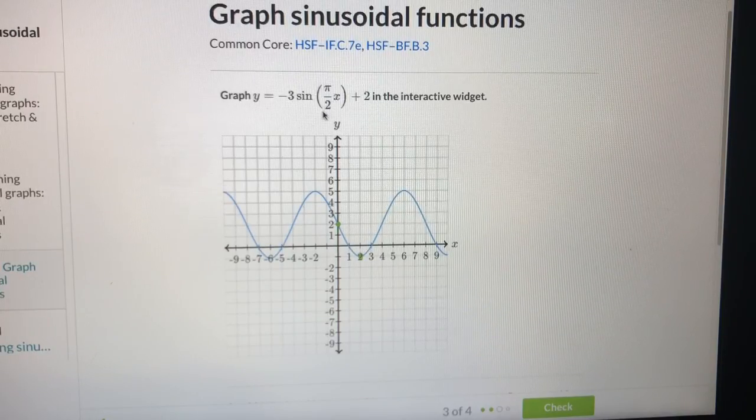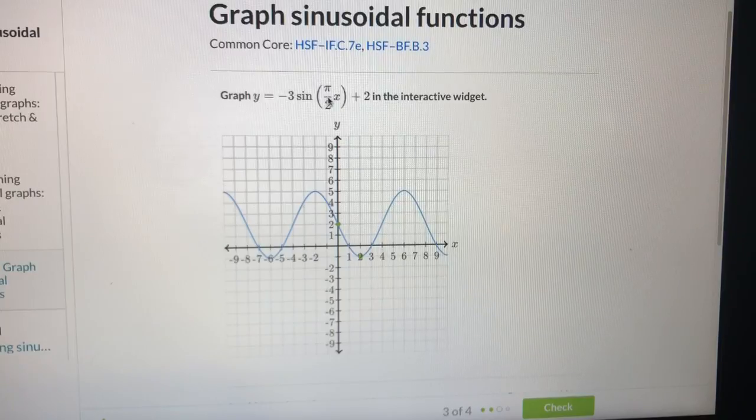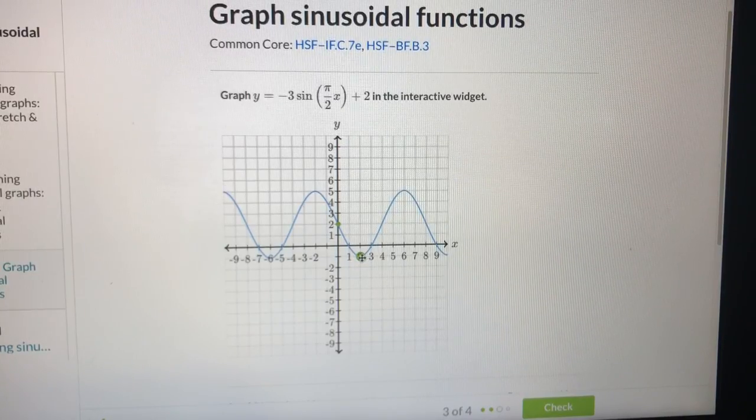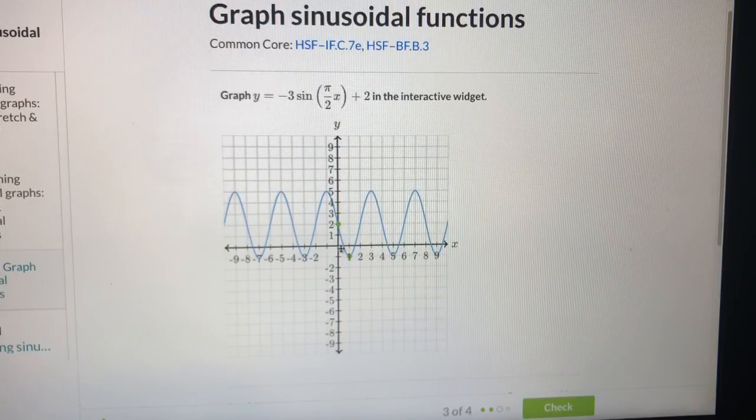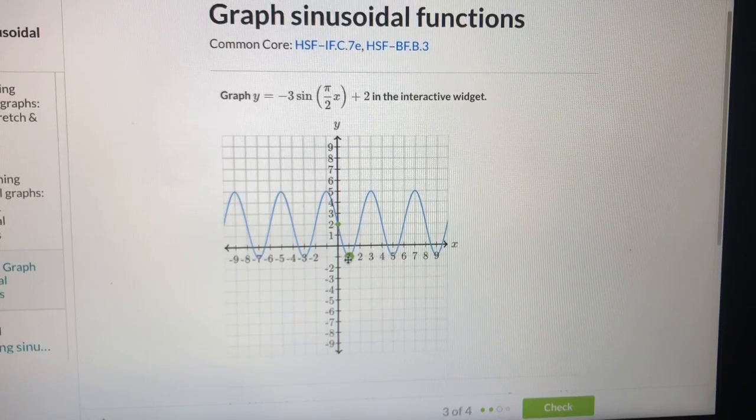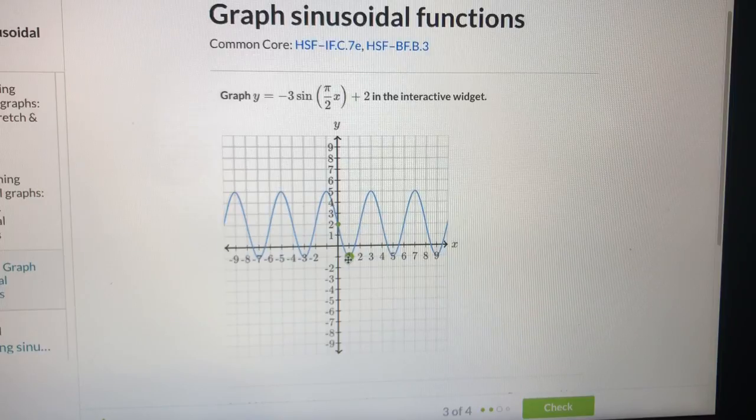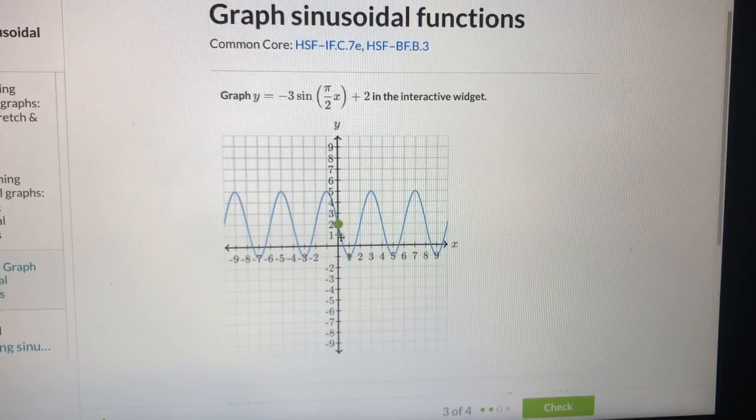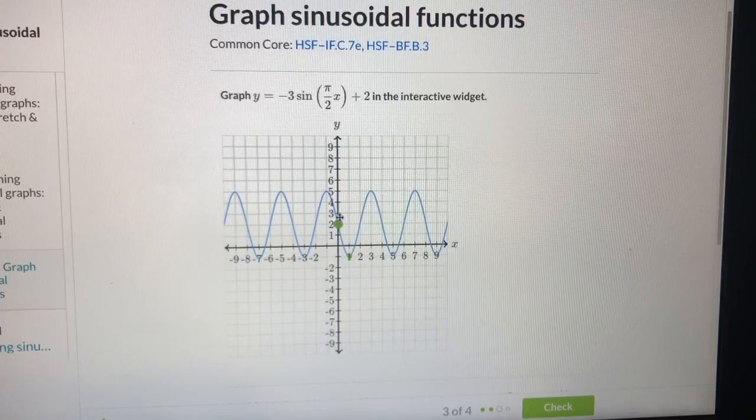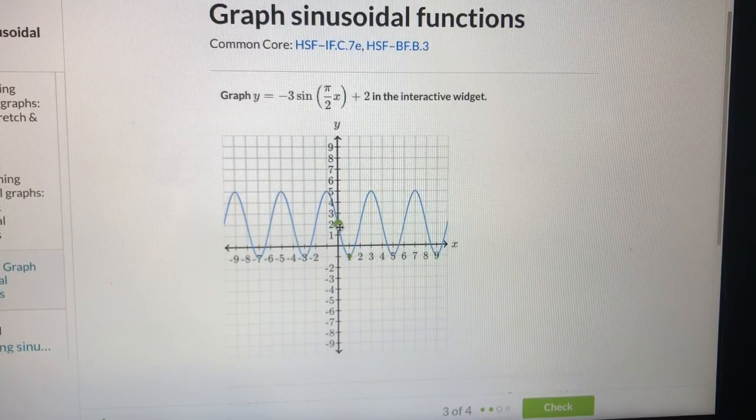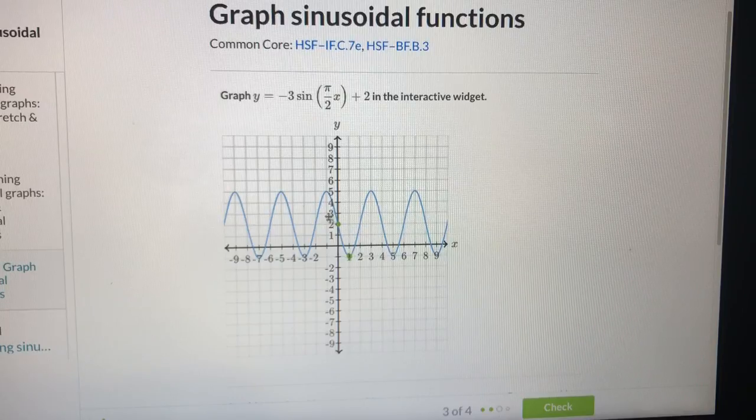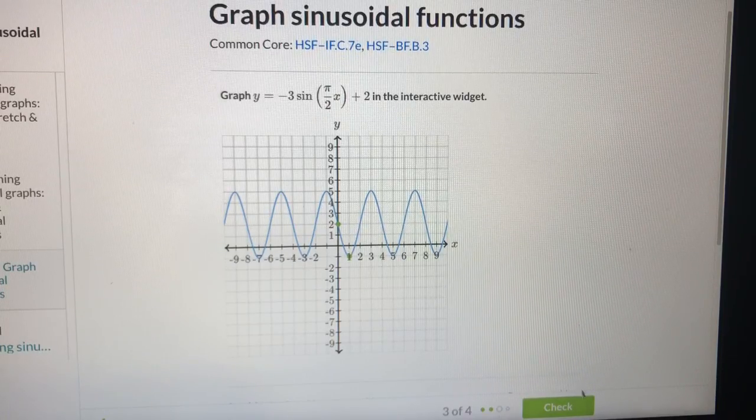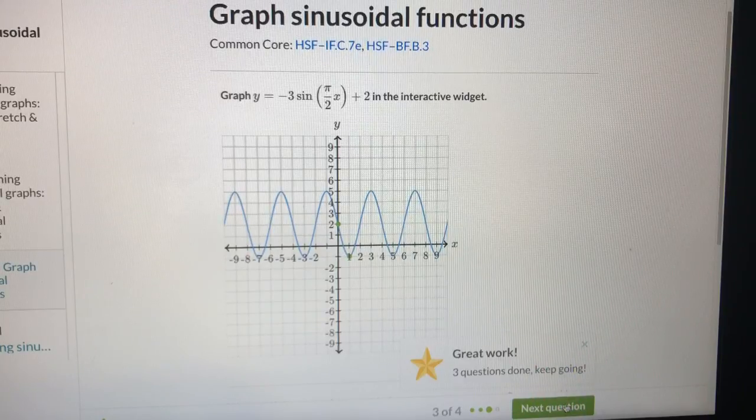Now we need to see the period. The period is 4. So here, we need to move it to 1. Sine, negative 3. Sine. Okay. And the midline is positive 2. And the period is 4. Yes. Yes, we are right.